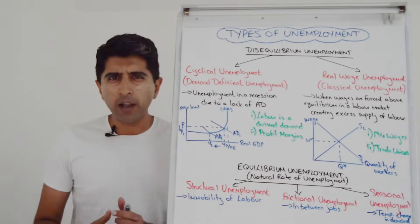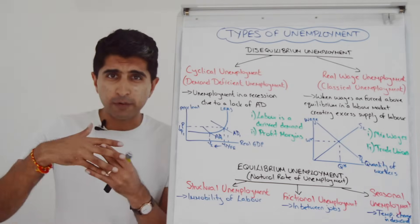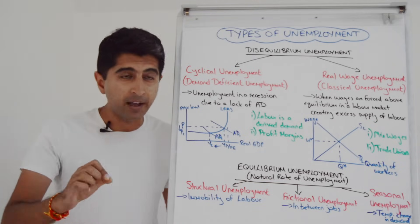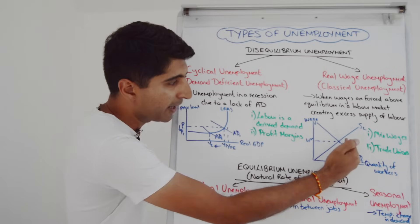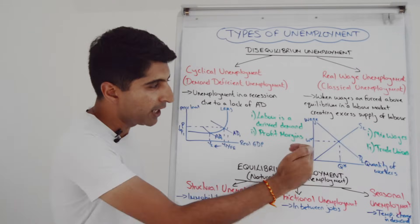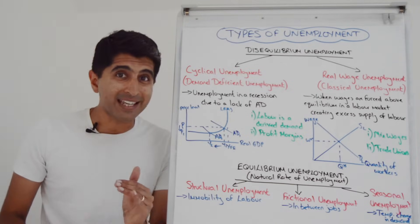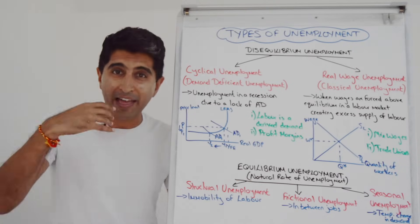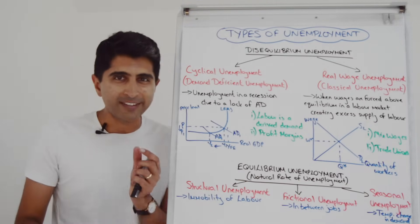Why does this fall under the heading of disequilibrium unemployment? Keynesians would argue that when there is a recession and a fall in demand for goods and services, there'll be a fall in demand for labour in the labour market. Picture the demand curve in a labour market diagram shifting to the left. What should then happen is that the market clears that existing excess supply, and you'd see lower wages at a new equilibrium. But Keynesian economists believe that wages are sticky downwards, so the excess supply that's created when demand for labour shifts left remains — and that for them is cyclical unemployment, that disequilibrium remains. Hence, this is also known as Keynesian unemployment.